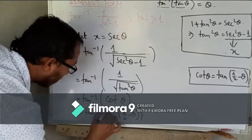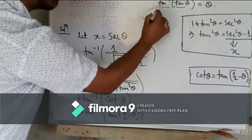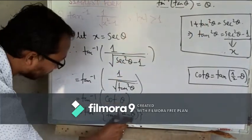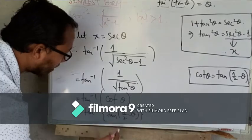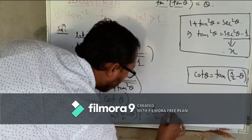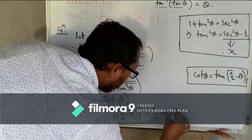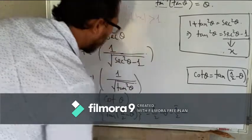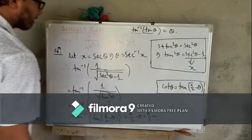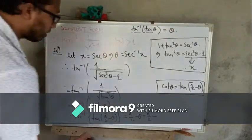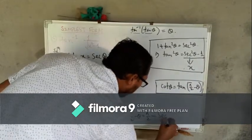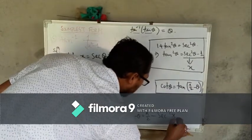Okay, then we can use this one: tan inverse of tan theta equals theta, so tan inverse of tan of 90 minus theta is equal to 90 minus theta. And as theta equals sec inverse of x, so in place of theta we can write sec inverse of x.